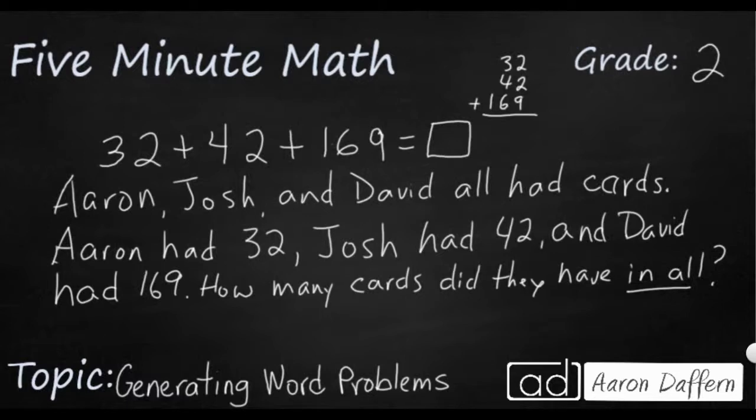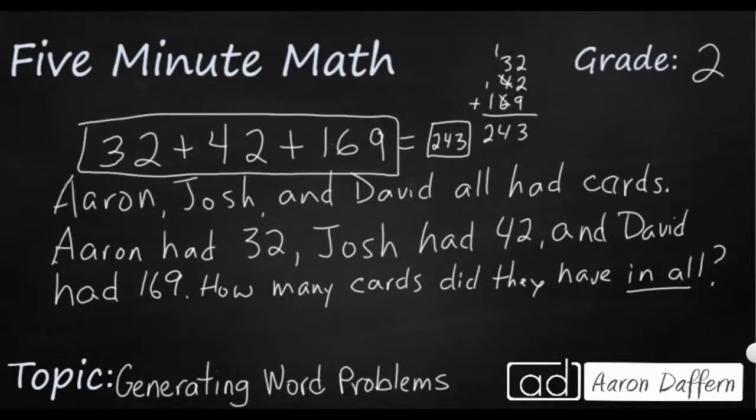So I've got 2, 4, that's 13. So that's 10. That's 14. So all together we had 243 cards. So that's how you can use number sentences, either addition or subtraction, to generate your own word problem.